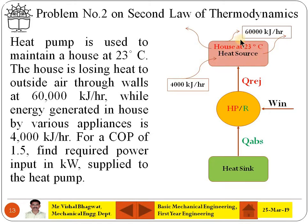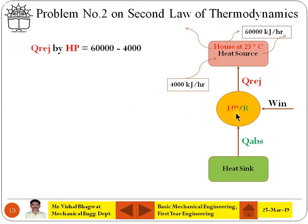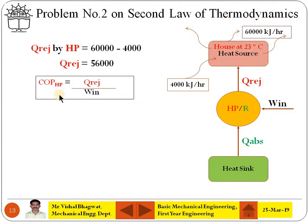Yet there are losses of 60,000 kJ per hour. So the total heat that must be added by the heat pump is 60,000 minus 4,000, which equals 56,000 kJ per hour. This is designated as Q_rejected. The COP of a heat pump is the desirable effect, that is Q_rejected divided by work input, and the given COP is 1.5 where Q_rejected is 56,000 kJ per hour.